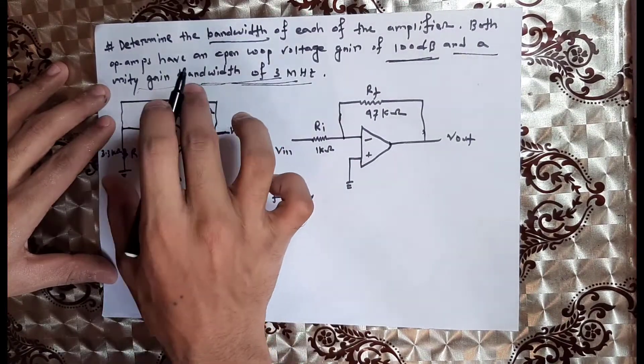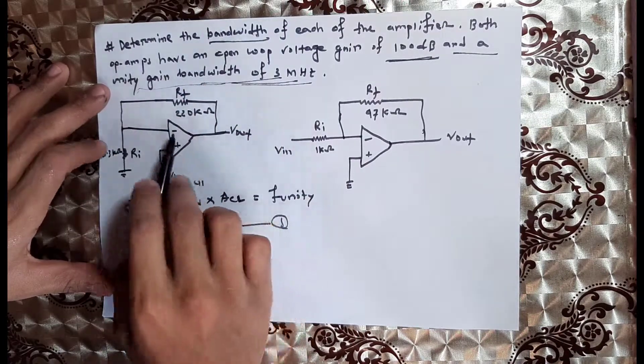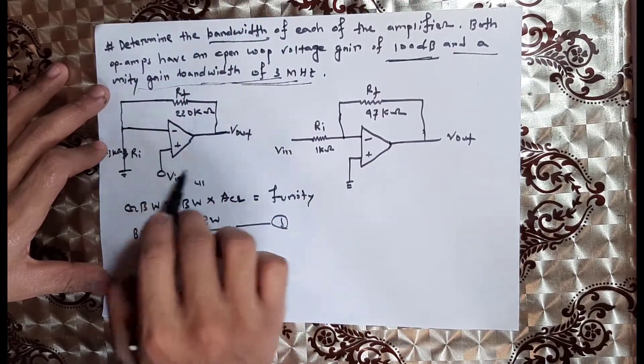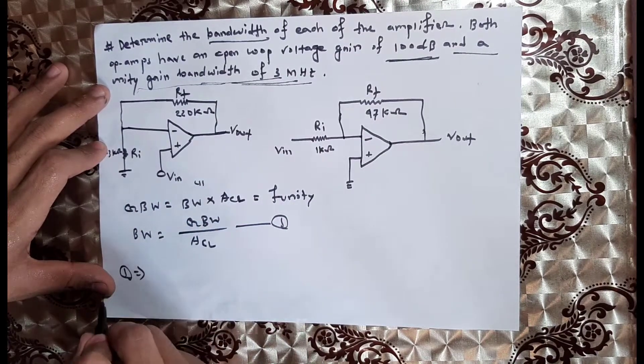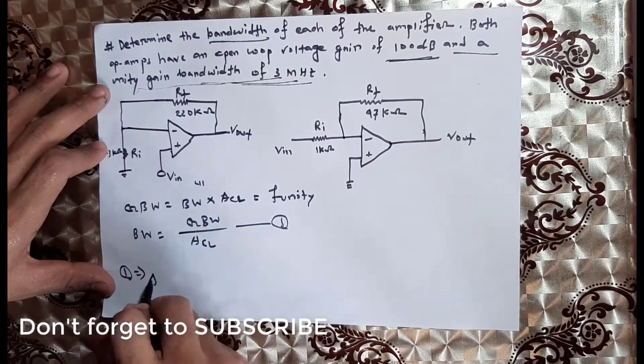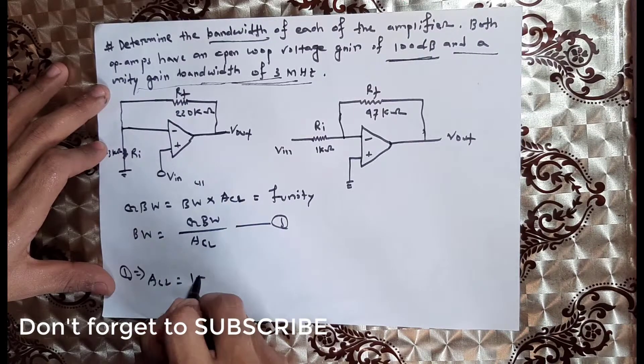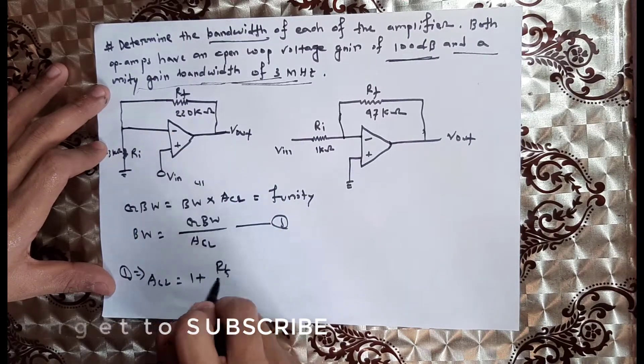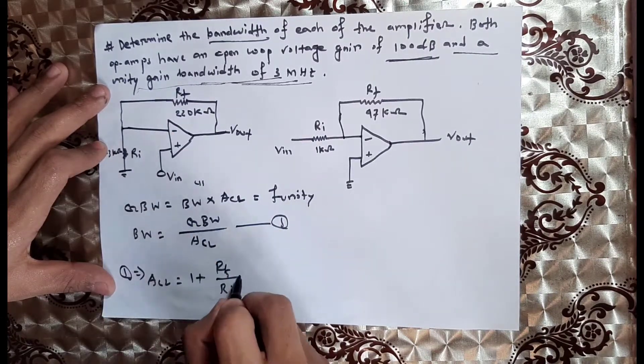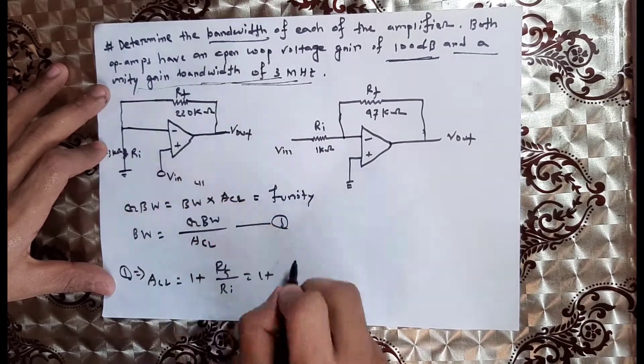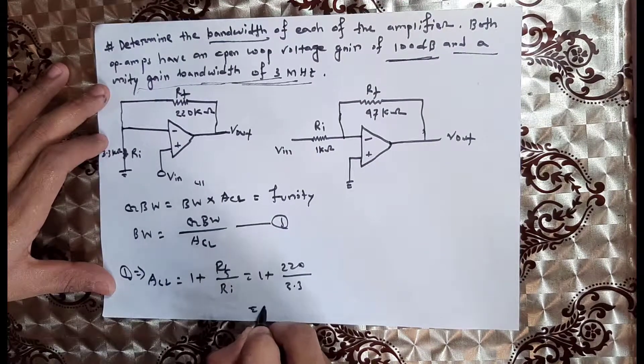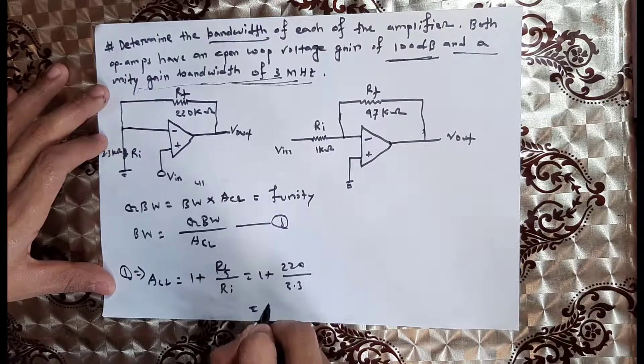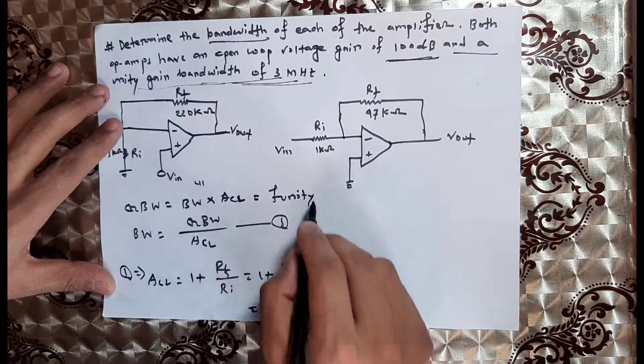In the first circuit, the non-inverting amplifier has a gain of 1 plus RF divided by RI. So 1 plus 220 kilohms divided by 3.3 kilohms gives us a closed-loop gain of 67.7.